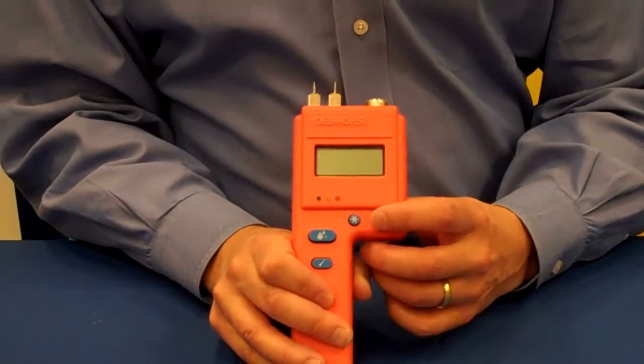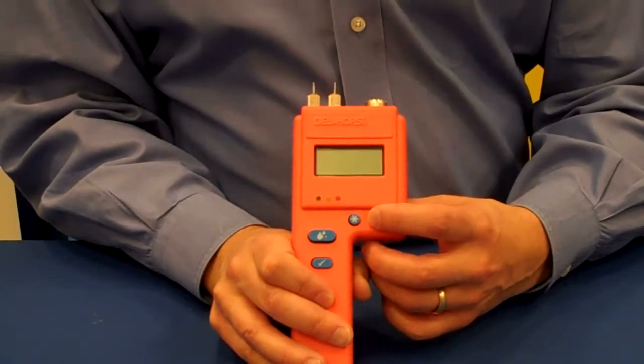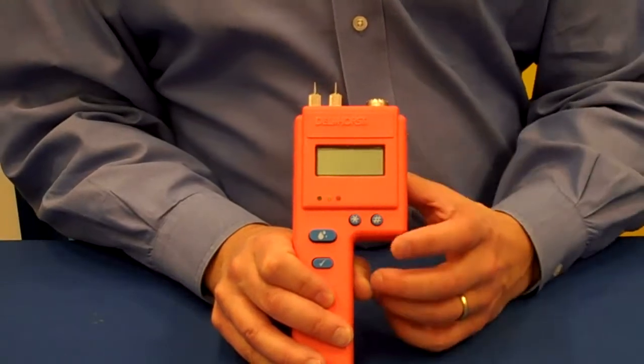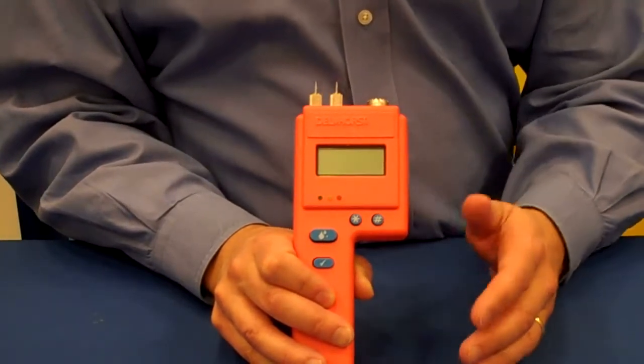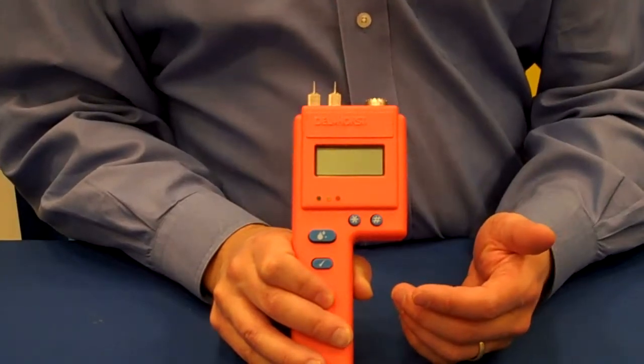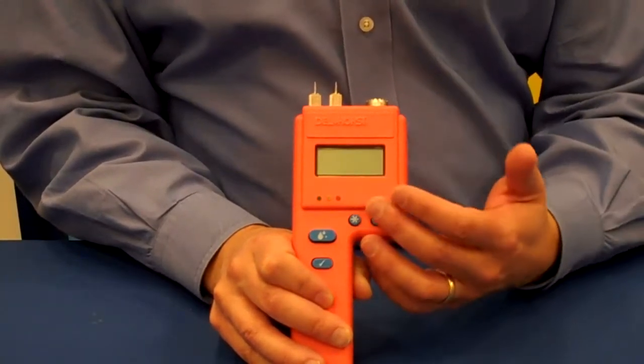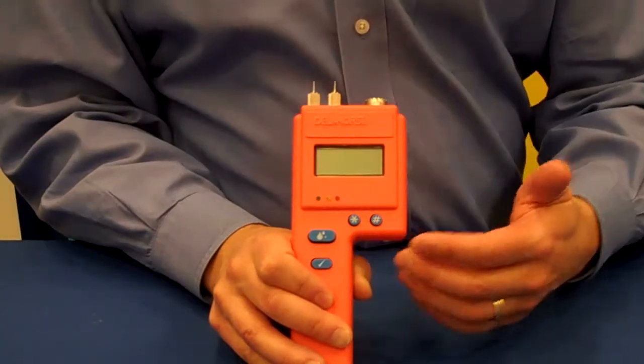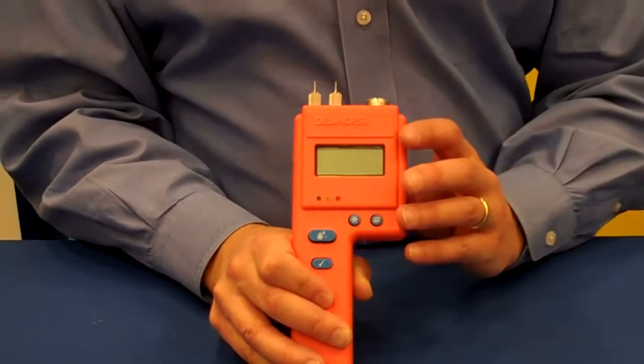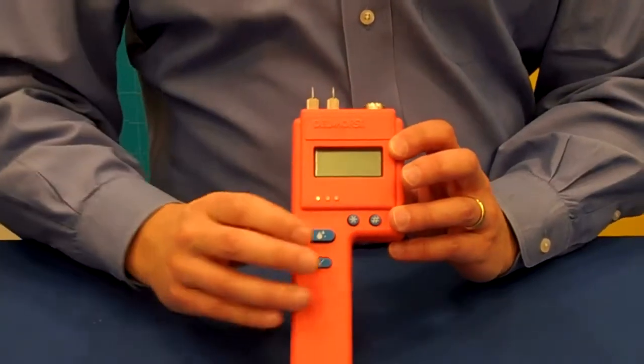The meter also offers an adjustable alarm setting for each scale. The alarm is a great feature because it allows you to identify a dry standard, set the alarm for that value, and then as you're taking readings, you listen for the alarm to go off, indicating that you're at a higher moisture level than the dry standard.